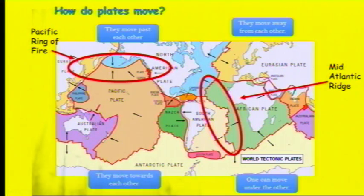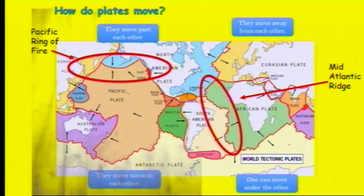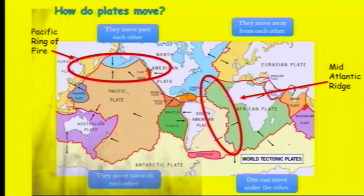We've got a map of the world here that shows you where the plate boundaries are. Whenever you get a question that asks you where earthquakes or volcanoes occur, the first mark will always be reserved for when you say that they occur on plate boundaries. You can then start to describe whereabouts those plate boundaries are and you can give examples of the different types of plate boundary.